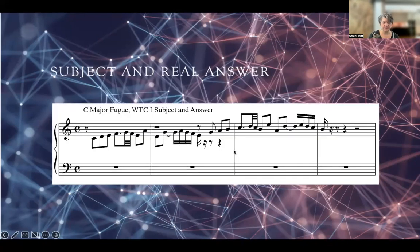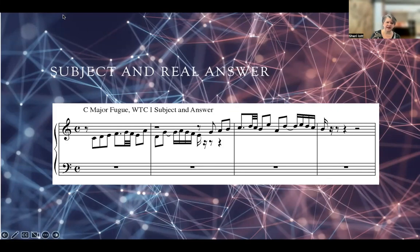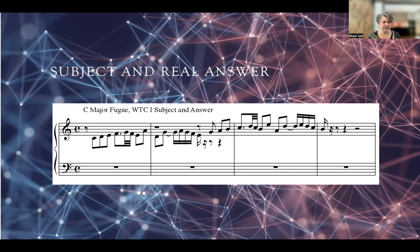We're going to start with the basic components of a fugue. A fugue will always begin with a subject in a single voice — in this case, in the alto. This is from the C major fugue from Well-Tempered Clavier Book One. It is then immediately followed by a real answer. The subject statement will always be followed by an answer at the fifth. If it's a real answer, it is intervallically identical to the subject, so every interval is preserved.